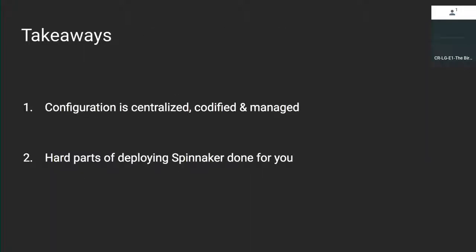Key takeaways: the HAL config presents itself as a centralized place where all your Spinnaker configuration lives. Every time you make a change and reapply it, that change will look the same every time you run it. This comes with documentation about how to write it yourself, and tooling to make sure that if you make an error, it'll help you figure out how to fix it. The hard parts of deploying Spinnaker — managing lifecycle, setting up monitoring, getting logs out easily — these are all handled on your behalf.